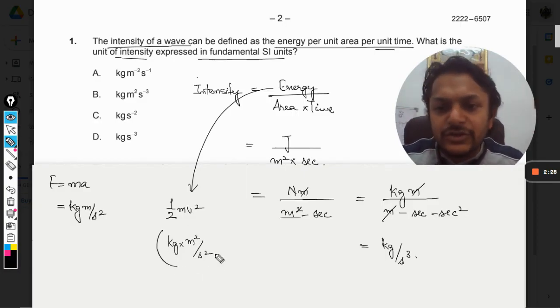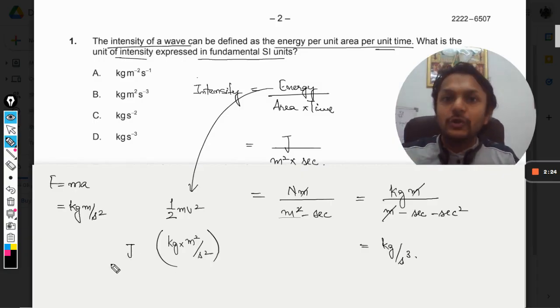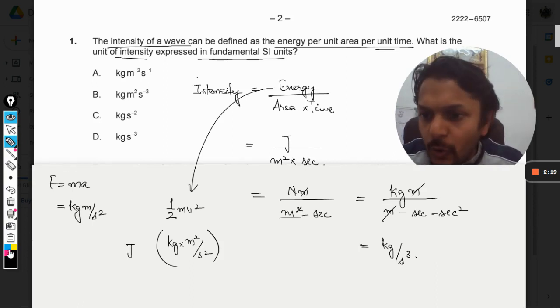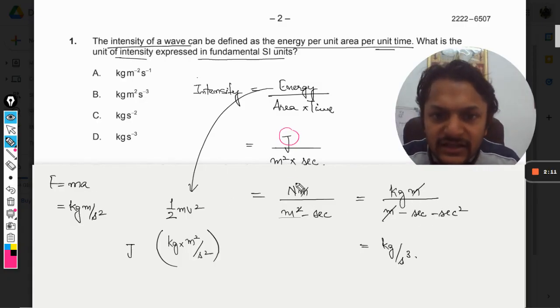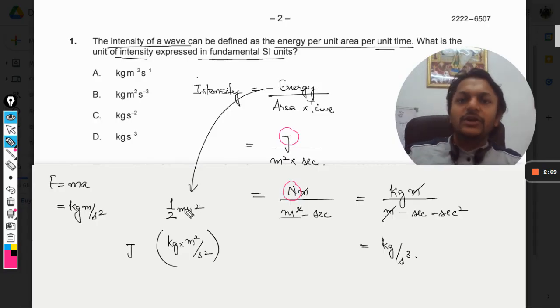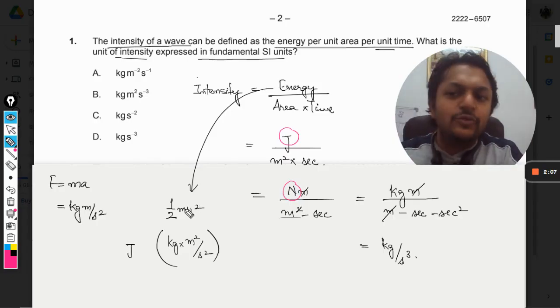We could have substituted this value instead of the composite unit joule. In this question there are two different composite units that we have used: one is joule, which we later divided into kgs, meters, and seconds, and the other one is newton.